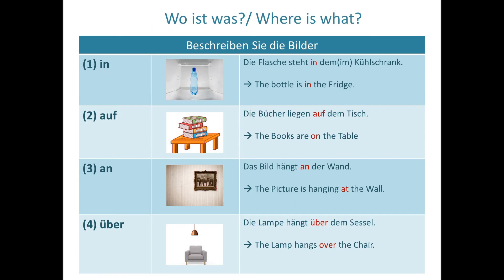So these are the nine Wechselpräpositionen we are looking at today. The categorization — when to use them in dative versus accusative case — we will see in the later slides. First, let's describe the pictures. The question is 'Wo?' meaning where is the object.